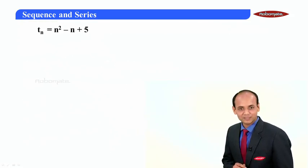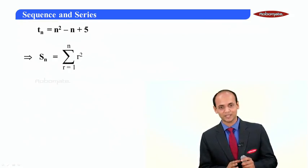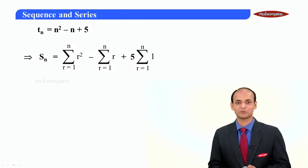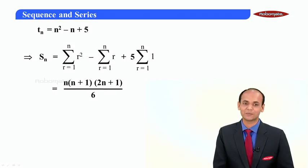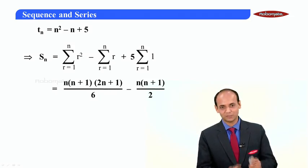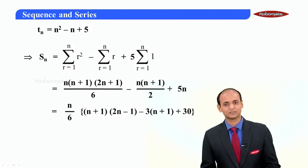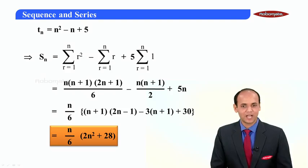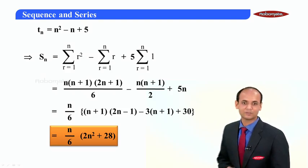To find the sum of the series, it is simply the summation of tn. So Sn equals the summation from r equals 1 to n of r squared, minus the summation of r from 1 to n, plus 5 times the summation of 1 from 1 to n. Applying the standard formulas — summation r squared equals n(n+1)(2n+1)/6, summation r equals n(n+1)/2, and summation 1 equals n — and simplifying, the final result is n/6 times (2n squared + 28).